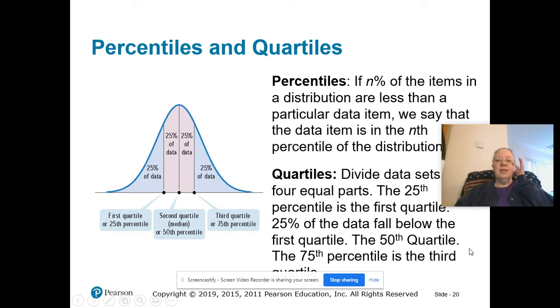A percentile is the percent of items that are less than a particular data item. When I showed you that z-score table in the first video for 12.4, what I was showing you was actually percentiles. These are the percentage of items below the data item, less than.